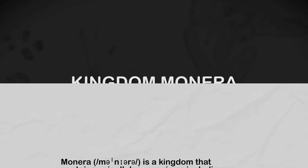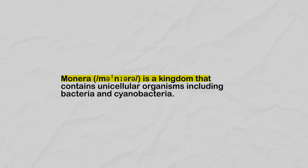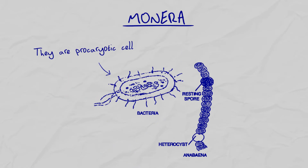Kingdom Monera is a kingdom that contains unicellular organisms including bacteria and cyanobacteria. Unicellular organisms can constitute a kingdom like Kingdom Monera. They have prokaryotic cells.